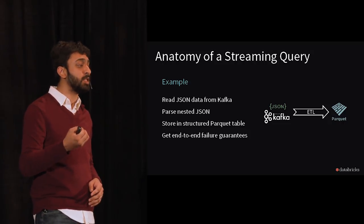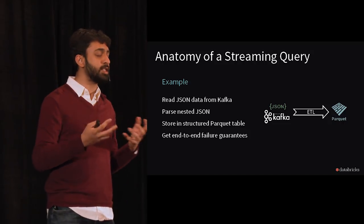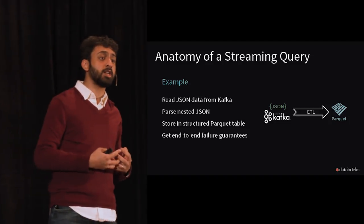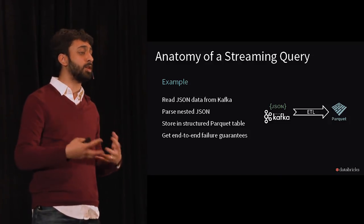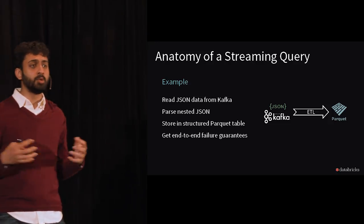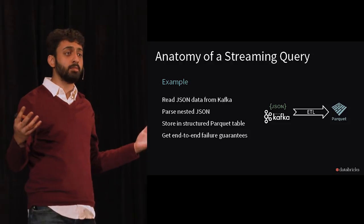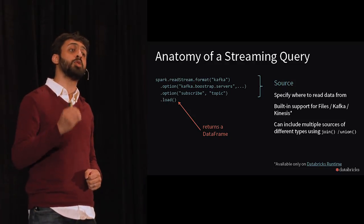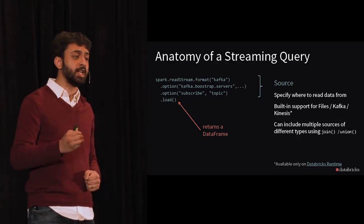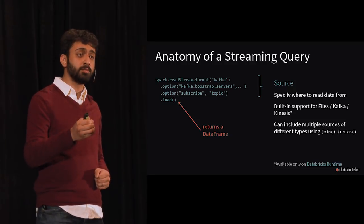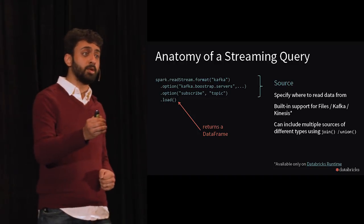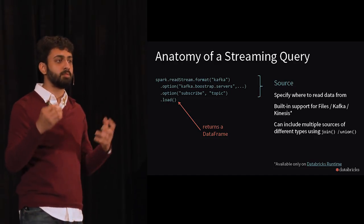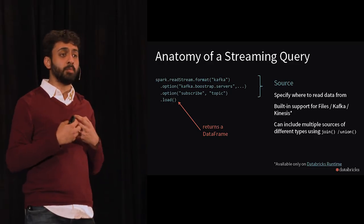Let me demonstrate with a simple example — though building something this simple in other systems becomes very clunky and complicated. Let's say you have JSON data coming in through Kafka. You want to parse the nested JSON into a more structured form and write it out as Parquet for interactive queries, while ensuring end-to-end fault tolerance so you don't drop or duplicate data.